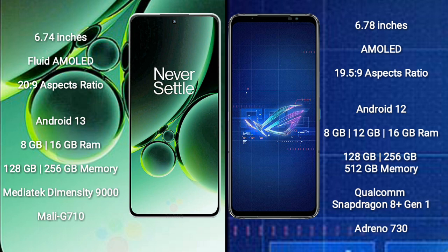OnePlus Nord 3 runs on the Android 13 operating system. Asus ROG Phone 6 runs on the Android 12 operating system. OnePlus Nord 3 comes with 8GB and 16GB RAM options.